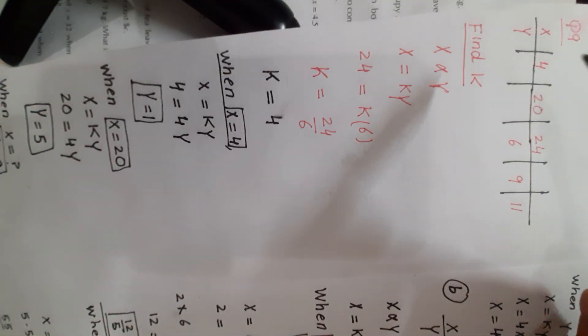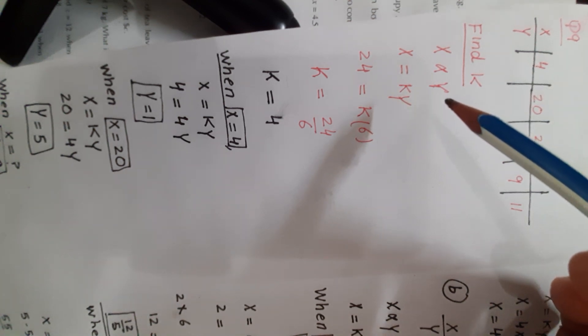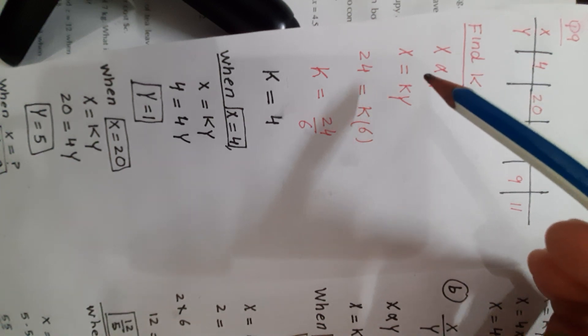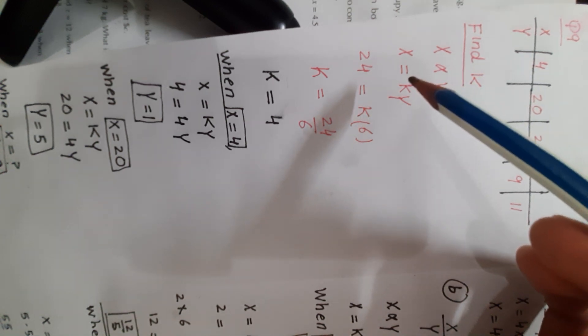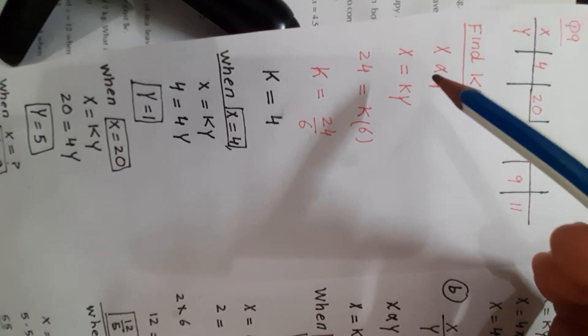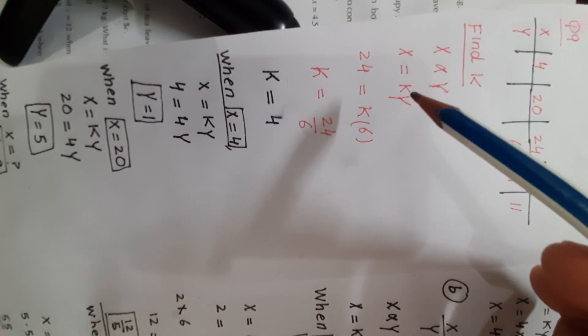Question number nine: for each of the following, y is directly proportional to x — copy and complete the table. First of all, write down the relation between x and y. Since x is directly proportional to y, insert an equality sign by inserting a constant k in order to convert the proportionality sign into an equality sign.